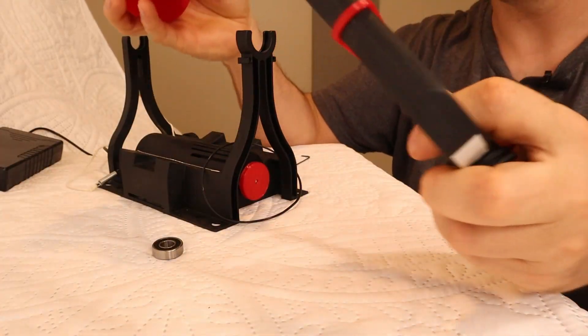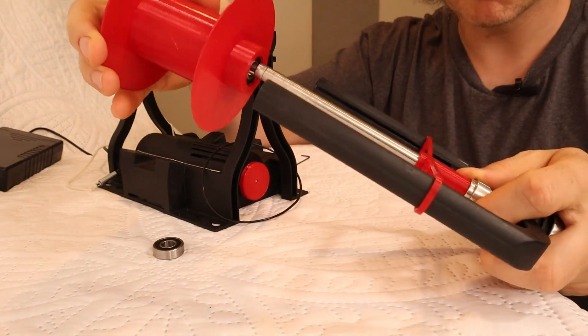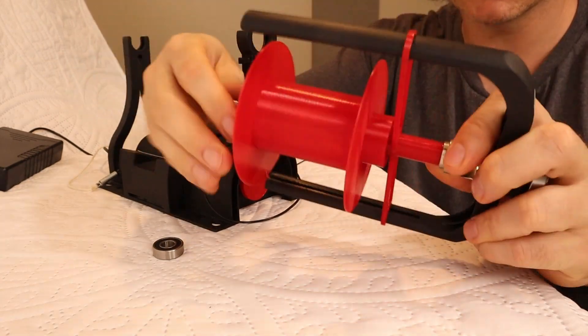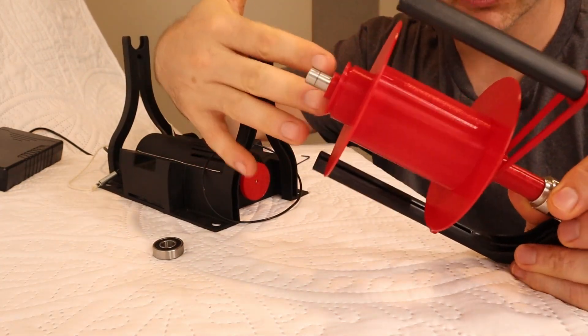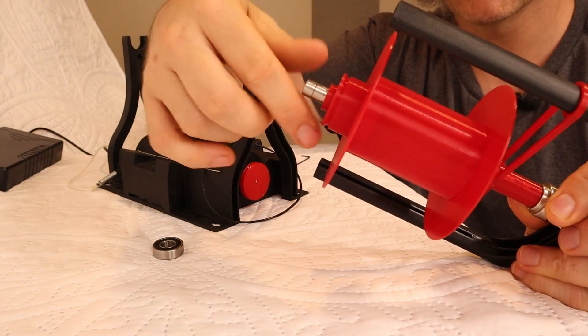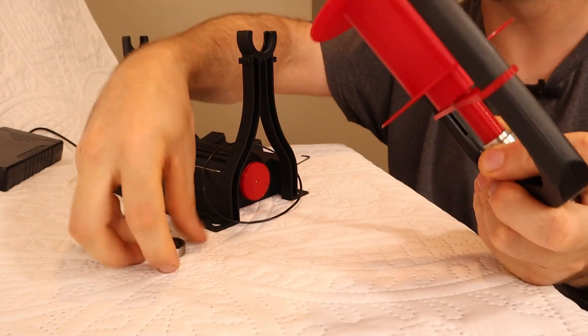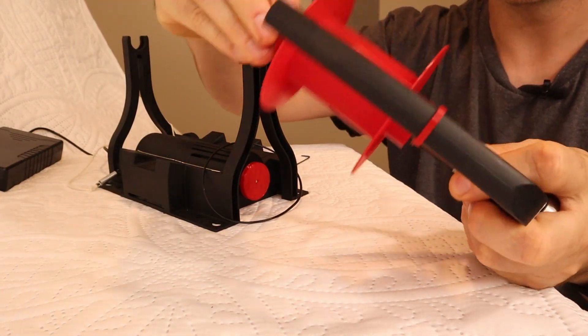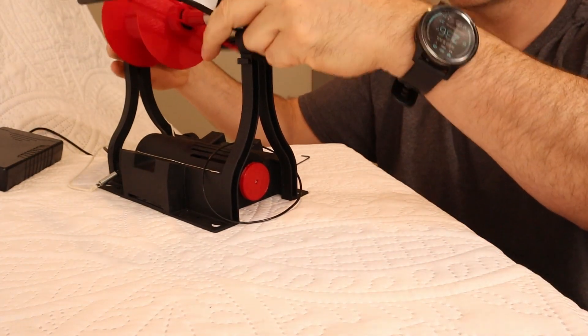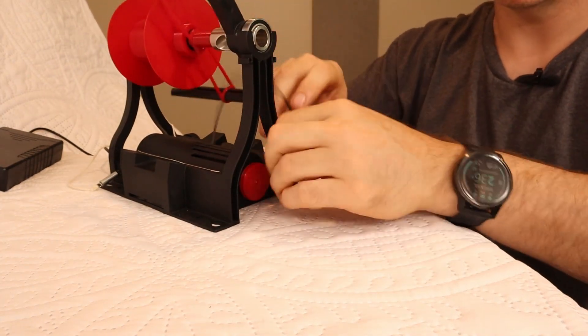So with all of the parts assembled, you just put the bobbin onto the flyer like this. And you'll notice the lip and the little groove there is facing outwards. Put on another bearing just like you would the normal flyer. You install it like that.